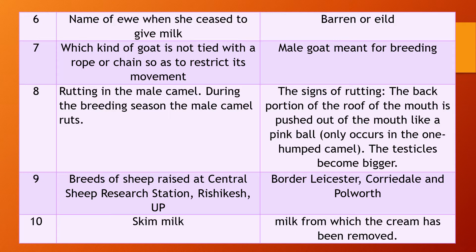Question 9. Breeds of sheep which are raised at the Central Sheep Research Station, Rishikesh, Uttar Pradesh. Answer: the breeds are Baudel Lister, Corriedale, and Polwarth.